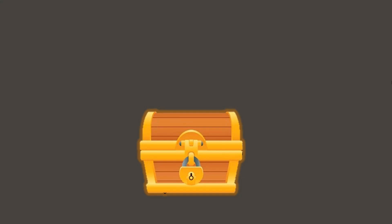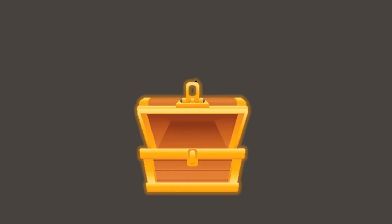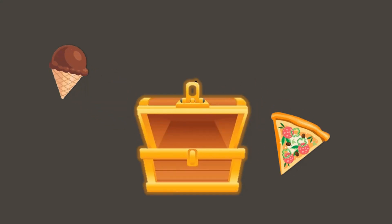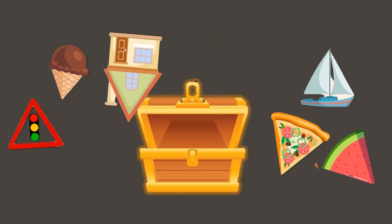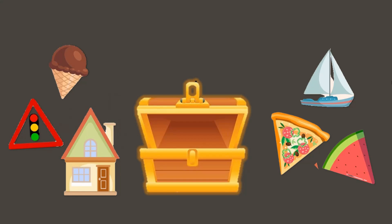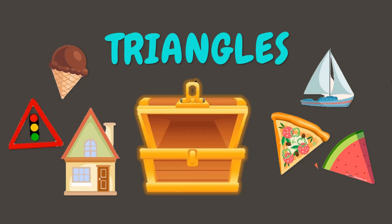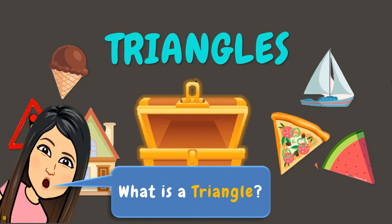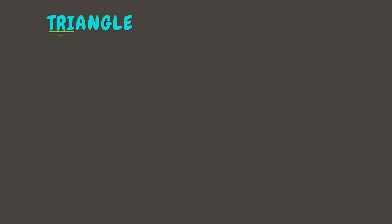Let's have a treasure hunt. Can you guess what's inside this treasure chest? Can you notice their similarity? They are all triangles. Now can you tell me what a triangle is? In the word triangle, 'tri' means three, and 'angle' means angle.